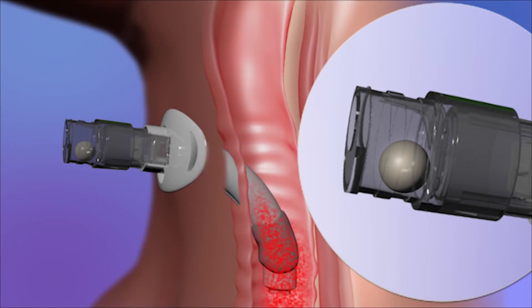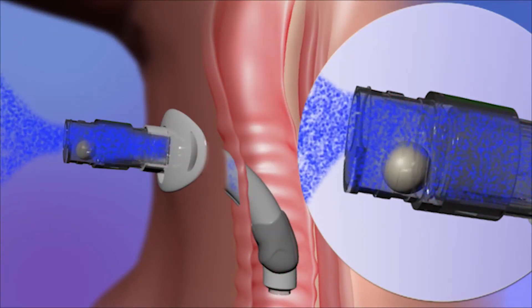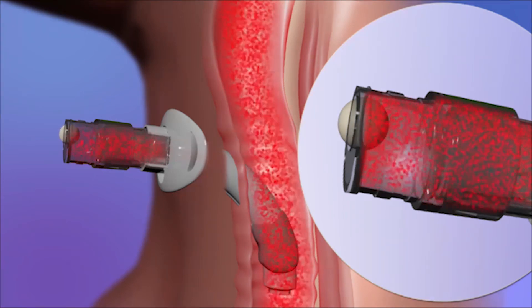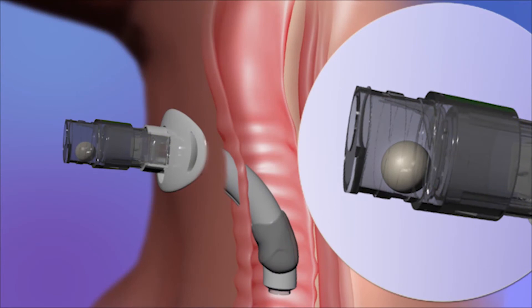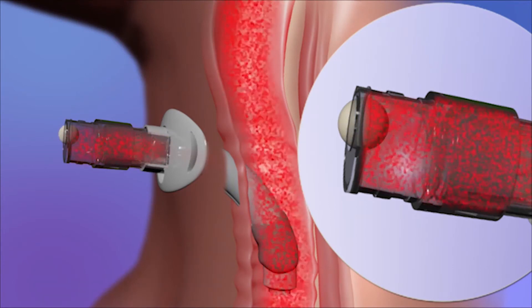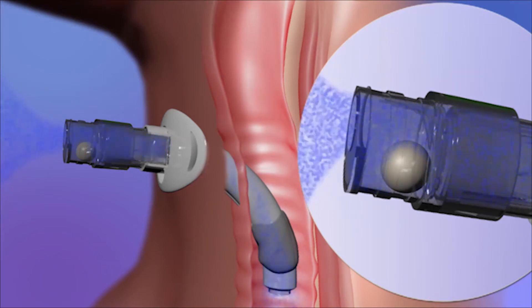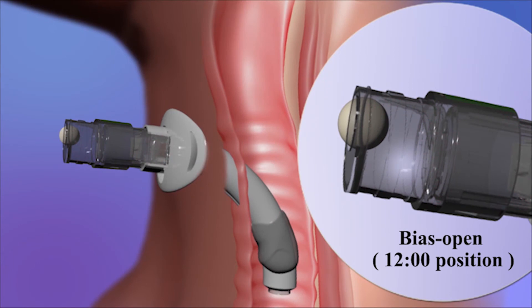When the patient wishes to vocalize, a slight ordinary exhalation force like the one we all have when we normally speak is all what is needed to cause the ball to move forward and close the frontal opening, hence redirecting air through the larynx. This 12 o'clock mode gives the patient complete control of how to use the valve and when to breathe and when to speak.